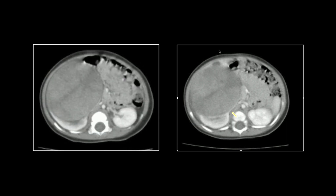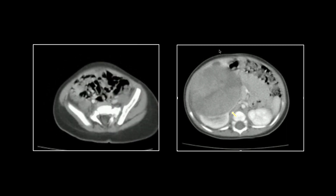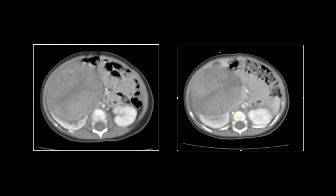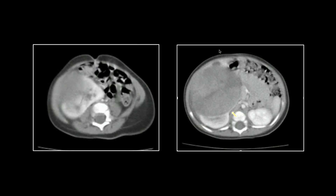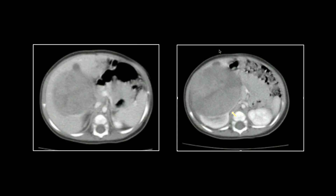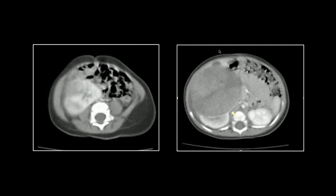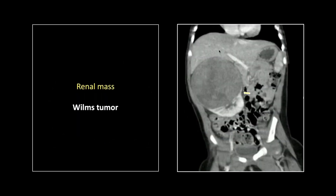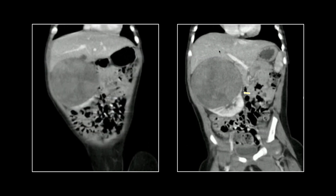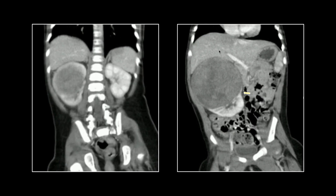These can be pretty confusing in terms of what organ they originate in. You have to look in all planes, but always look for that claw sign — it really suggests this came from the kidney. Let's look at that one more time. On the coronal it really helps to tell the story; there's that claw sign again.